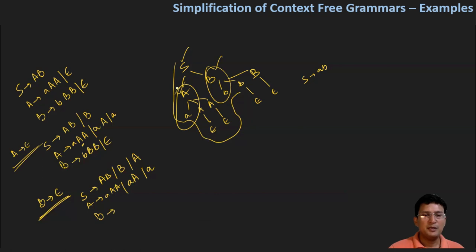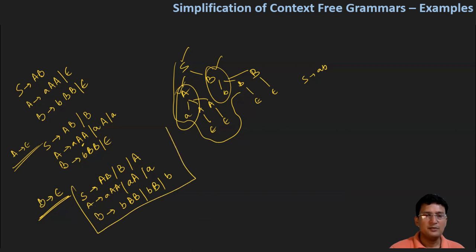B produces small b, capital B, capital B. If we place epsilon in place of either one, you will remain with B, B. And if we place epsilon in place of both, you will remain with only B. So this is the simplified version of the grammar.